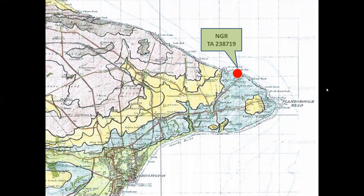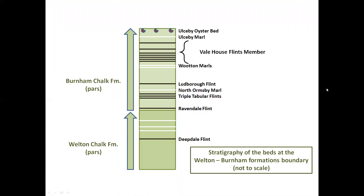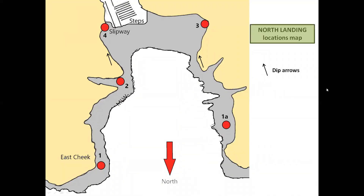It's only a short transfer from the bays at Thornwick to North Landing, where once again we'll be able to examine the chalk sequence at and above the Welton–Burnham formations boundary. Our diagrammatic representation of the stratigraphy shows a wealth of readily recognisable marker bands, including the thickest marl — the North Ormsby Marl — and thickest flint band — the Lydborough flint — in the whole of the chalk group of the Northern Province. Here we're going to look at exposures in the cliffs and on the wave-cut platform, starting at East Cheek, Locality 1, and then work back via localities 2 and 3 to the access point, Locality 4, next to the slipway. Look back to the lifeboat station and note the base level of the Pleistocene till, which is filling another pre-Devensian paleo valley, similar to the ones at Thornwick.